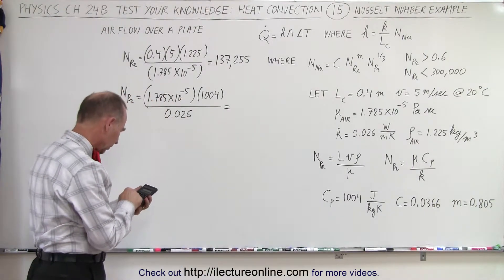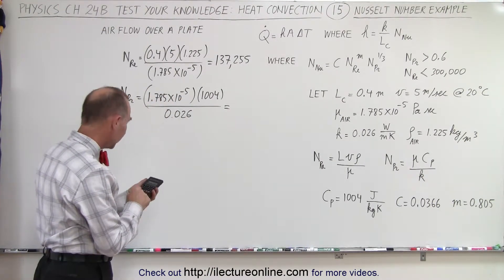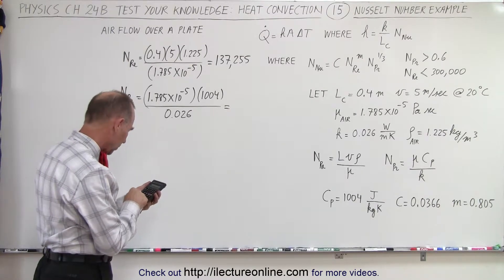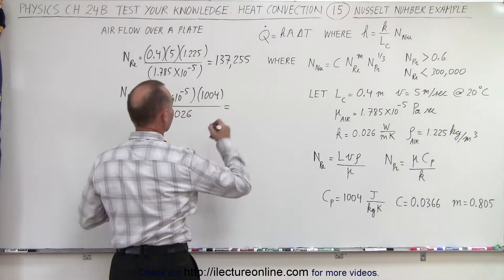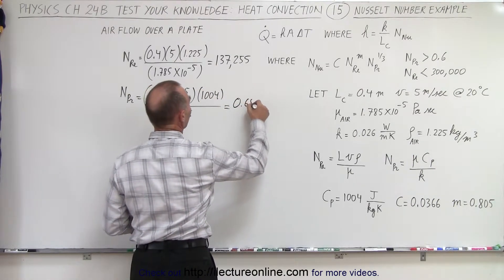So 1.785 e to the minus 5 times 1,004 divided by 0.026 equals 0.689.